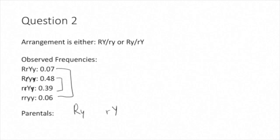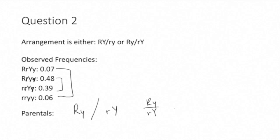Now that we have our parental gametes, we know that the heterozygous individual has its chromosomes arranged with big R and little y on one chromosome, and little r and big y on the other. So we would know that the genes R and Y are in repulsion. And then you can write the notation like this, with a slash in between, or like this, or like this.